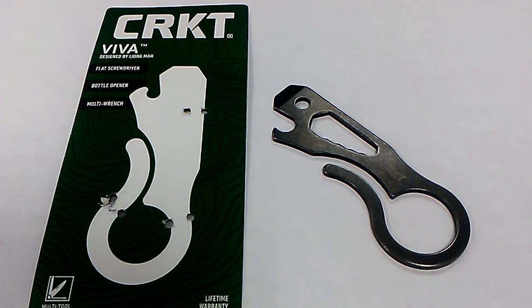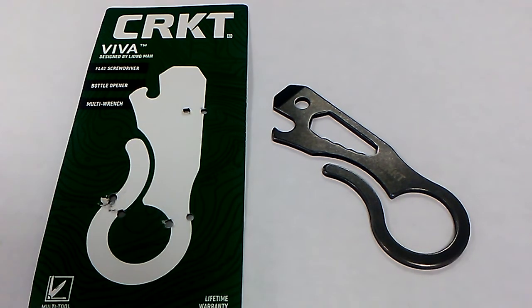I think the tail is supposed to be used as a letter opener or something along those lines. Well, today we're going to take a look at the Columbia River Knife and Tool Viva. This is one of the more well-known of the OPMTs out there.